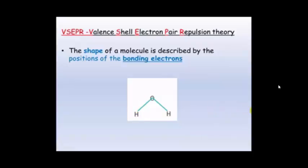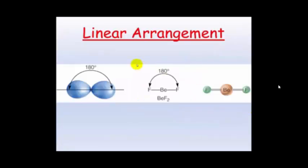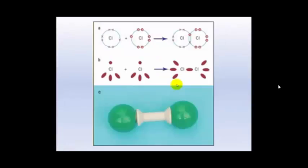Here are some common examples. Linear arrangement just means a straight line. As you can see, these atoms are 180 degrees away from one another. Chlorine will form this, and even though it's got lone pairs of electrons on the outside, these are not involved in determining the final shape because we're only talking about the bonding pairs of electrons.